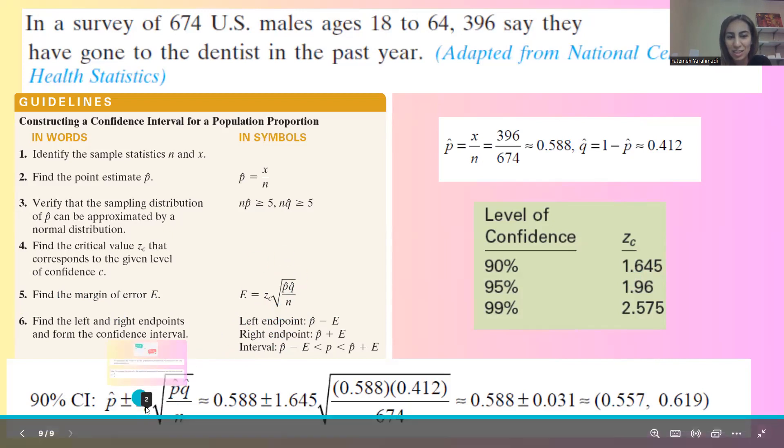I need to plug everything in. So Z sub C times square root of p hat times q hat divided by n is 0.588 times 0.412, these are the numbers that you calculated here, divided by n. n is the sample size, which is 674.